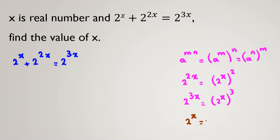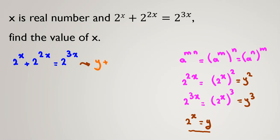If I consider 2 to the x as a variable — let's call it y — then 2 to the 2x is y squared and 2 to the 3x is y cubed. So replacing 2 to the x with y, the equation becomes y plus y squared equals y cubed.